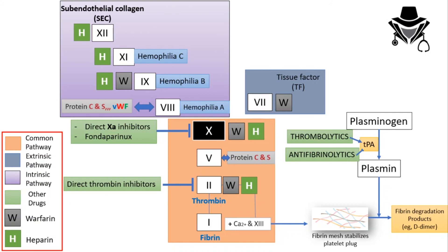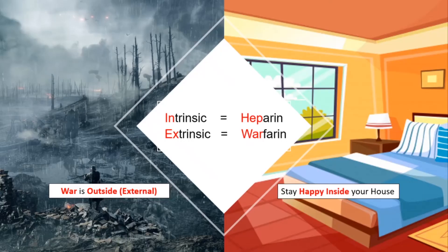So the key concept: the intrinsic pathway is related to heparin, and the extrinsic pathway is related to warfarin. A mnemonic: think of warfarin as a war — and the war is outside, so it's external (extrinsic). For heparin, to get out of the war, stay happy inside your house — so heparin is with the intrinsic pathway.